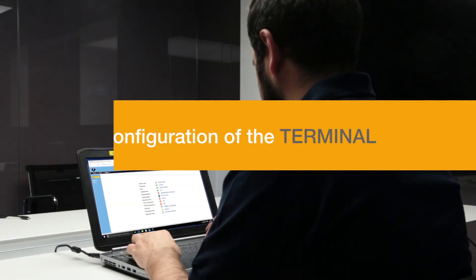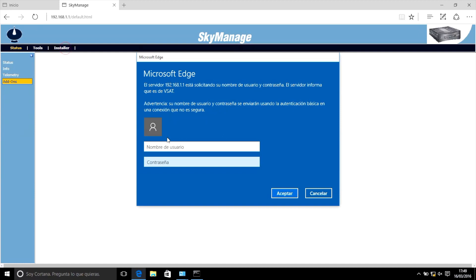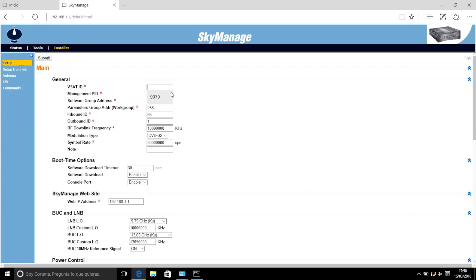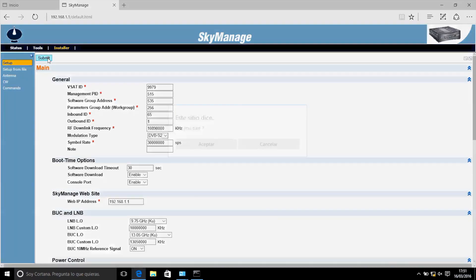Configuration of the terminal. In order to correctly configure the terminal, you must go to the Installer tab. To access this tab, you must enter the user data that you can find in the installation manual on eSpaSat's website. This way, you will be able to access the following page. By clicking on Setup, you can see the entire configuration of the terminal, which you must fill in according to the parameters that appear in the installation manual using the values provided by the ISP. When the configuration has been completed, click Submit to apply the changes.